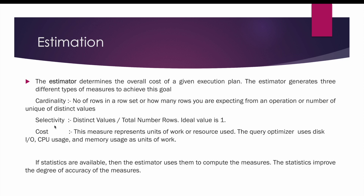The second measure is selectivity. Selectivity is the number of distinct values divided by the total number of rows, and the ideal value of selectivity is 1. Taking the same example, the number of distinct values in the employees table is 100 and the total number of rows is also 100, so 100 divided by 100 gives a selectivity of 1, meaning employee ID has the best selectivity.